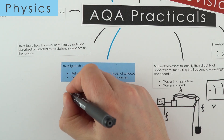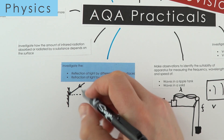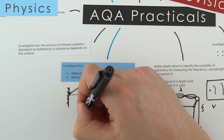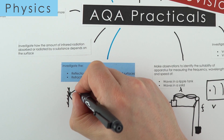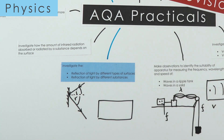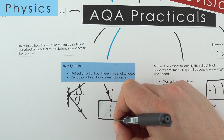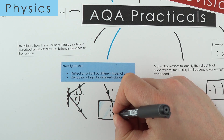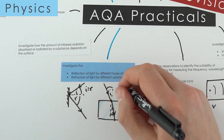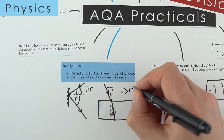To investigate reflection of light, set up a mirror, shine a ray from a ray box at it, draw a normal at 90° to the surface, and mark where the reflected ray goes. Measure the angle of incidence and angle of reflection — you should find they are equal. For refraction, use a glass block instead, mark where the ray exits, and measure the angle of incidence and angle of refraction. When light enters glass it slows down, and the angle of incidence is greater than the angle of refraction.